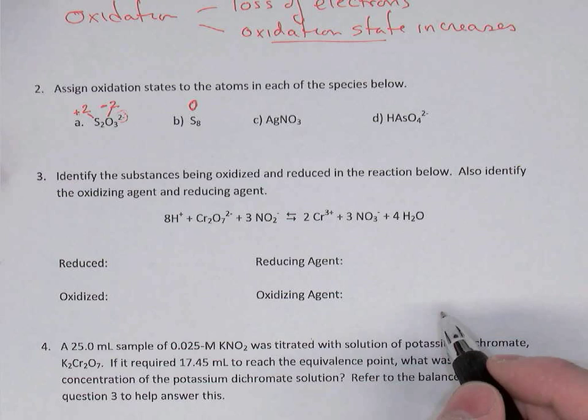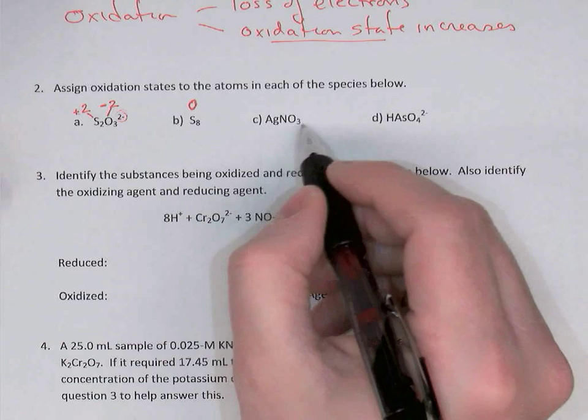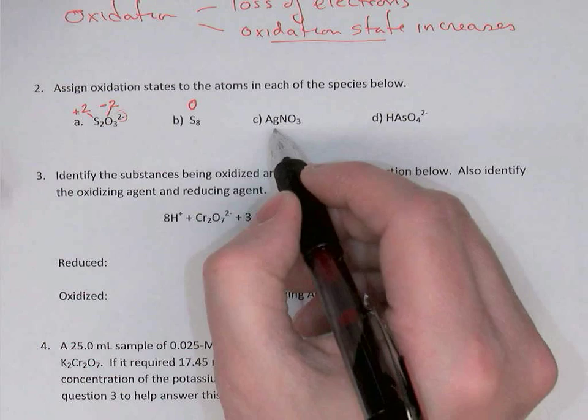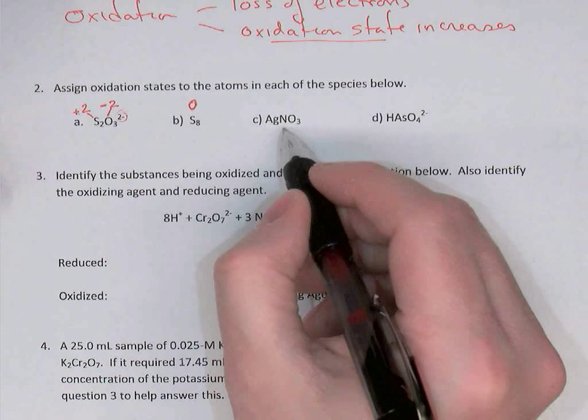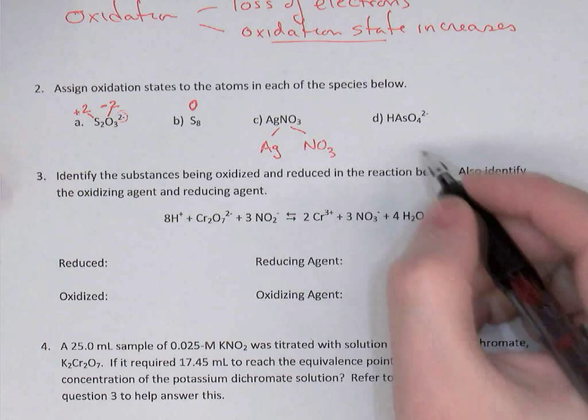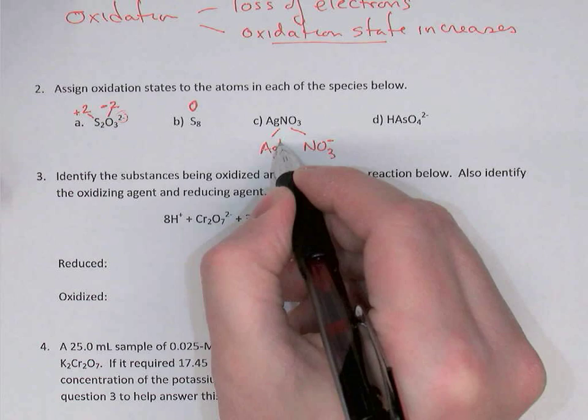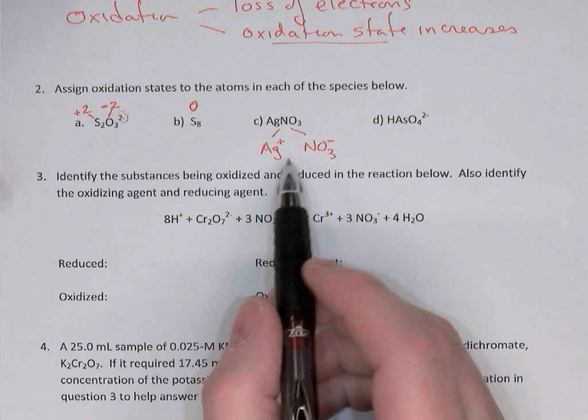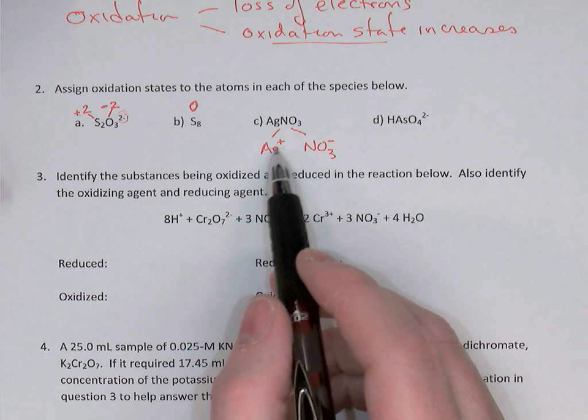The third example is silver nitrate. I recognize it as an ionic compound — a metal bonded to the complex ion nitrate. So I'll split it into its two ions: Ag and NO3. Nitrate is NO3 minus, which means the silver is Ag positive. Ag positive is a monoatomic ion, so its oxidation state is the same as its charge — plus one.